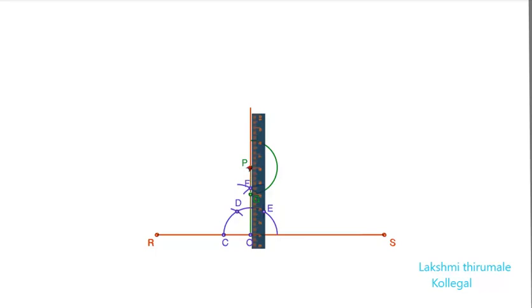With this radius and center as G, draw an arc. Mark the point of intersection of the arc and the semicircle. Let the point be Q.